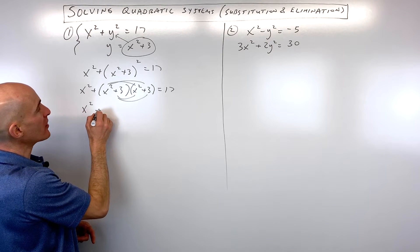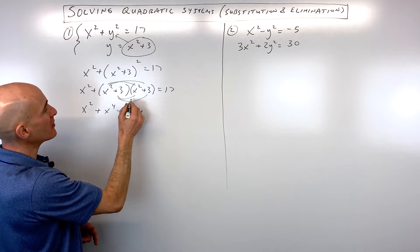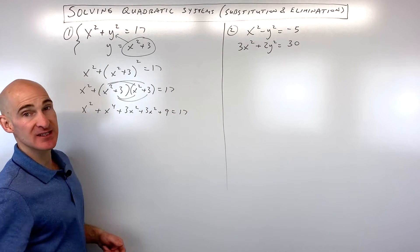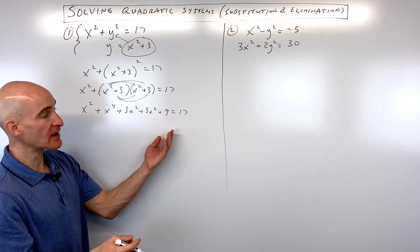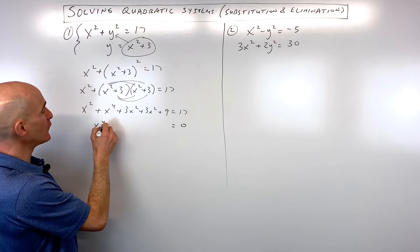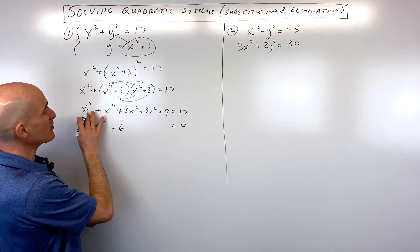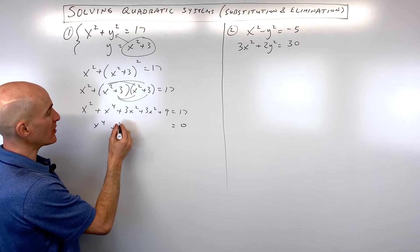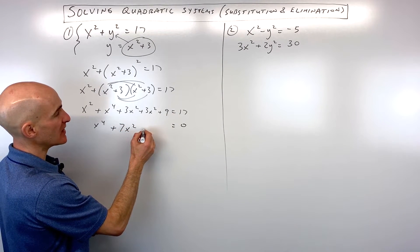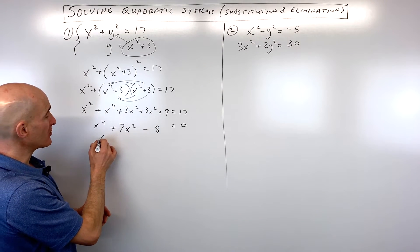That gives us x squared plus x to the fourth plus 3x squared plus another 3x squared plus 9 equals 17. Getting everything on one side and setting it equal to zero, we get x to the fourth plus 6x squared plus 1x squared, which is 7x squared. Subtracting 17 from both sides gives us negative 8. Now we're going to factor this.